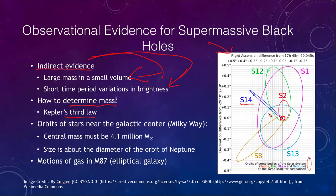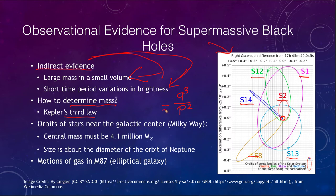Stars like S14 follow very elliptical orbits — they come out, whip right down, turn around, and go right back out the opposite direction. We can figure out their semi-major axis A and their period P. The mass of that central object equals the cube of the semi-major axis divided by the square of the period. When we do that, we find 4.1 million solar masses as a good estimate.